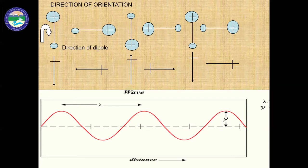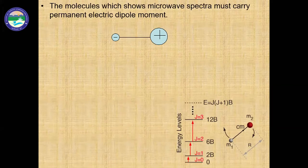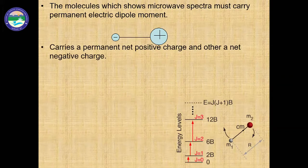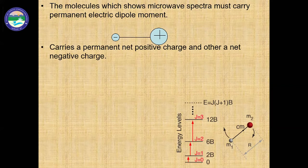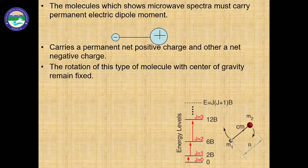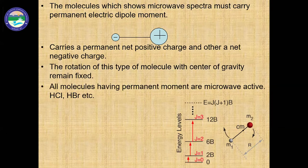For rotational spectroscopy, the molecule must carry a permanent dipole moment. If it has a dipole moment, the molecule will rotate; when incident light causes rotation, the molecule absorbs or emits and you get information. Molecules like hydrogen chloride (HCl) and hydrogen bromide (HBr) are examples with permanent dipole moments that give microwave spectra. H₂ will not give a microwave spectrum because it has no dipole moment.